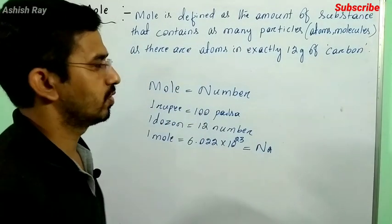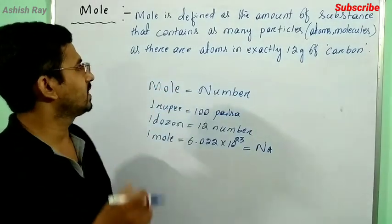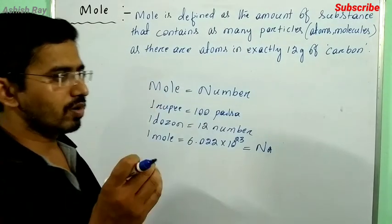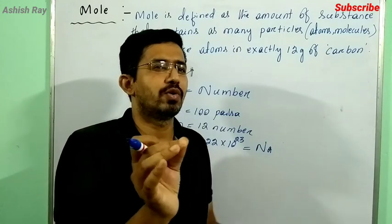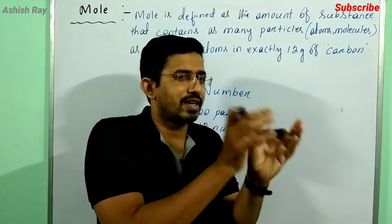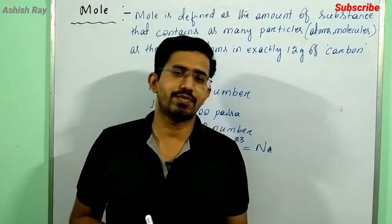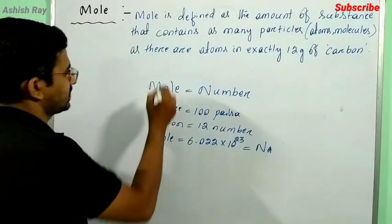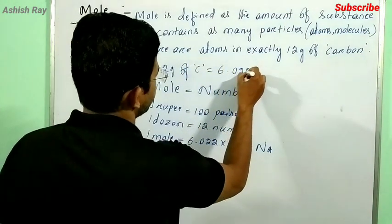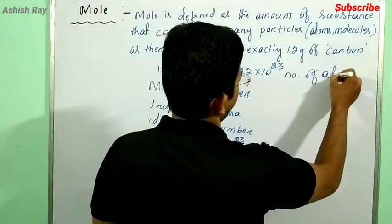Now let's go to the definition of mole. Mole is defined as the amount of substance that contains as many particles as there are atoms in exactly 12 grams of carbon. So the amount of substance equals the number of particles present in 12 grams of carbon.